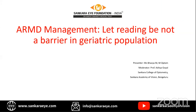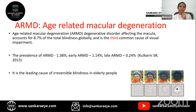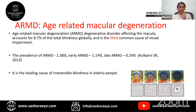Today's session is on ARMD management — let reading not be a barrier in the geriatric population. ARMD, age-related macular degeneration, is a degenerative disorder affecting the macula. It accounts for about 8.7% of total blindness globally and is the third common cause of visual impairment. A study by Kulkarni (2013) shows a prevalence of 1.38%, with early ARMD at 1.14% and late ARMD at 0.24%. It is the leading cause of irreversible blindness in the elderly.